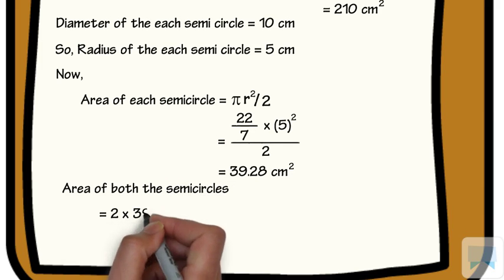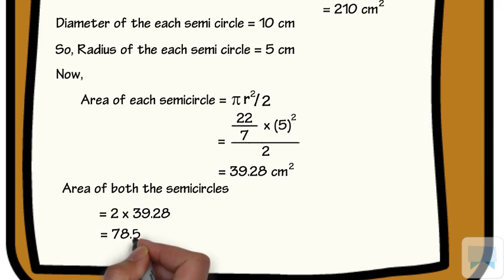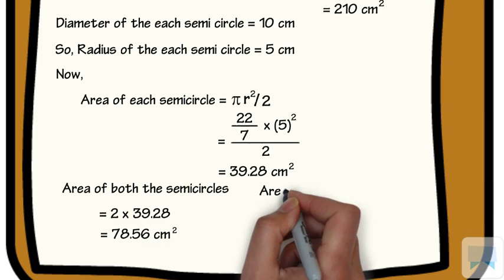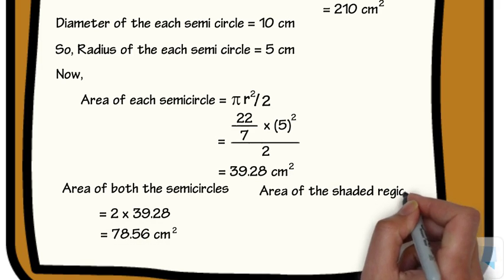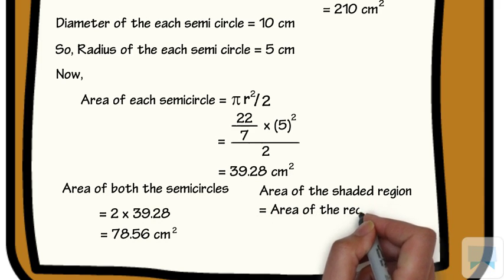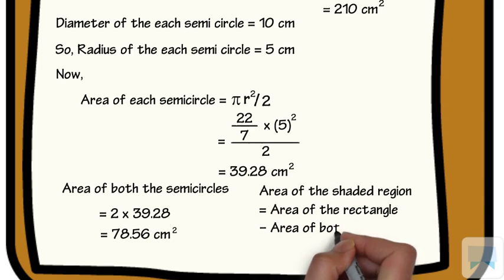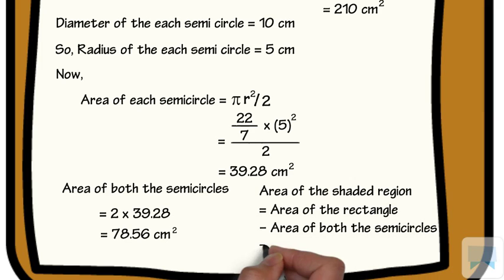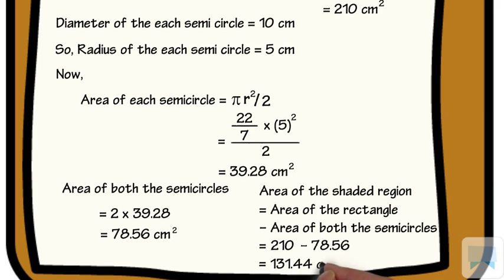This equals 78.56 cm². Area of the shaded region is equal to area of the rectangle minus area of both the semicircles, which is 210 minus 78.56, equal to 131.44 cm².